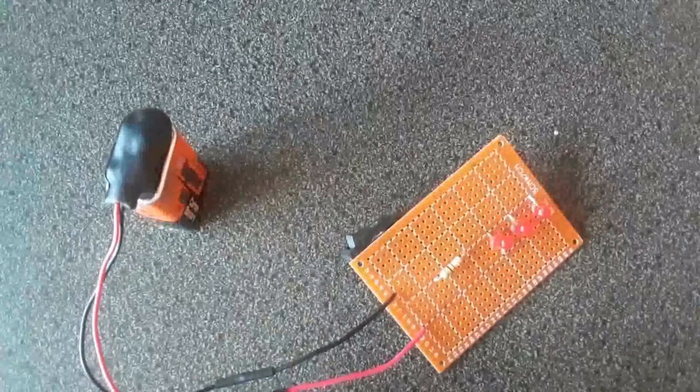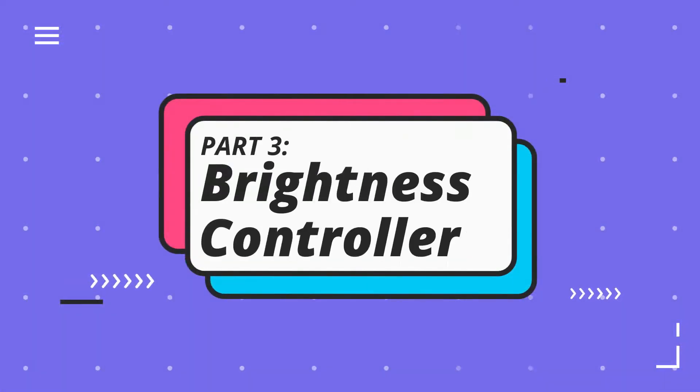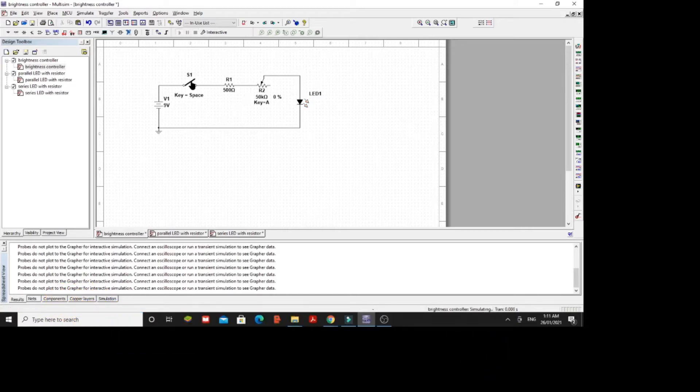Part 3: LED brightness control circuit. First, let's create a schematic diagram for our LED circuit with brightness control.